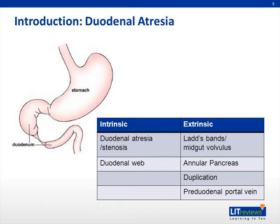Extrinsic obstruction has many causes, including malrotation with Ladd's bands, pre-duodenal portal vein, gastroduodenal duplications, cysts or pseudocysts of the pancreas and biliary tree, and annular pancreas.